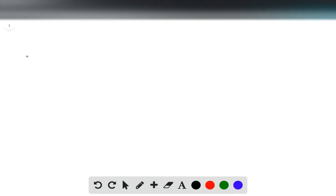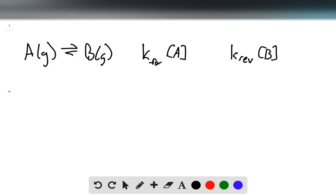This question asks us to consider the reaction A gas forms B gas with a simple one-step reaction where the forward rate equals K forward times A and the reverse rate equals K reverse times B.